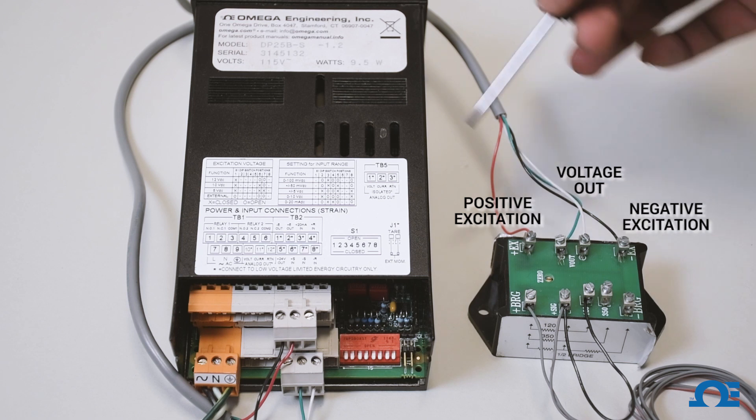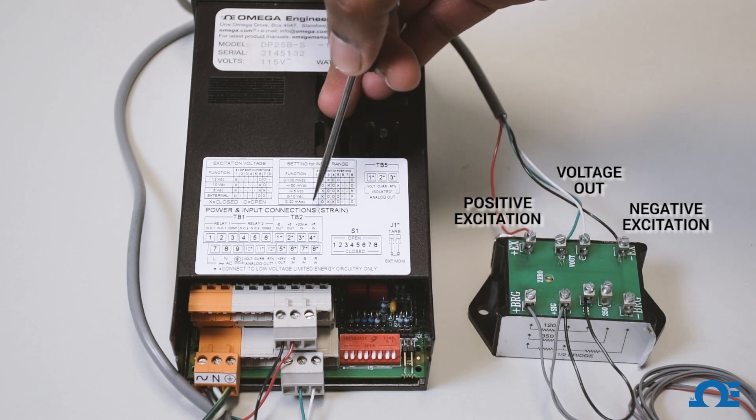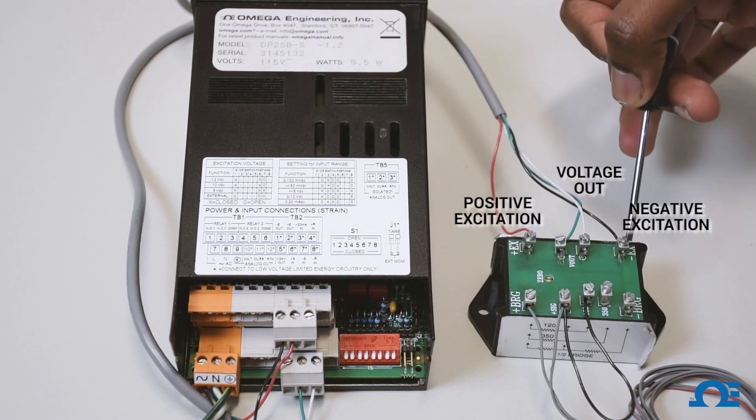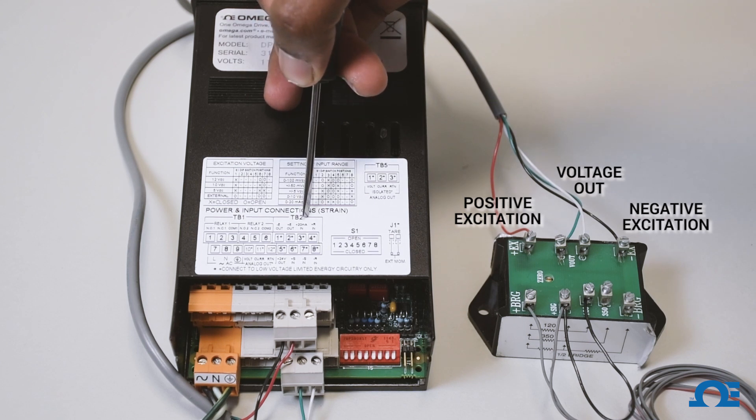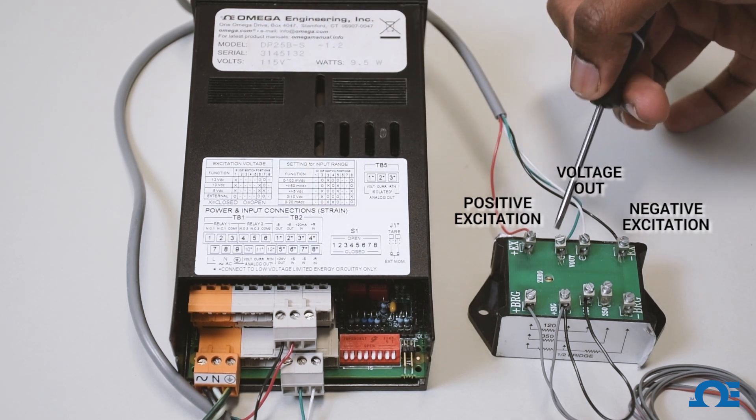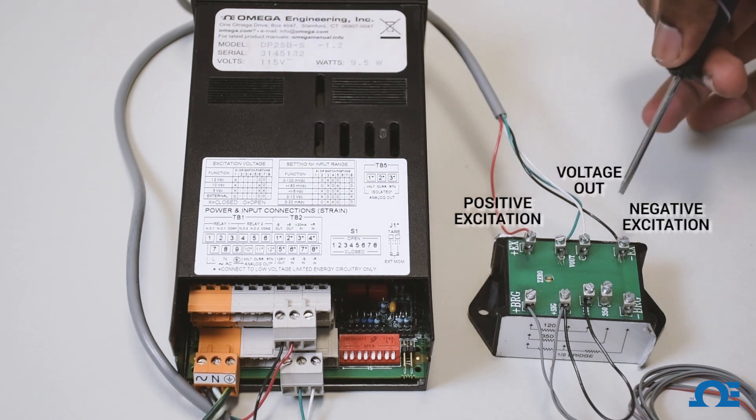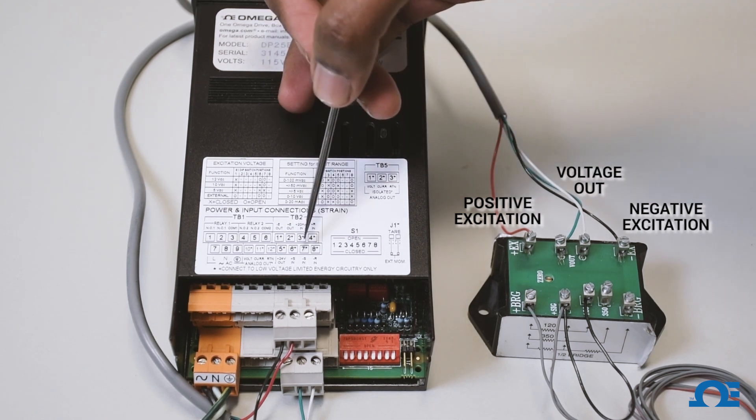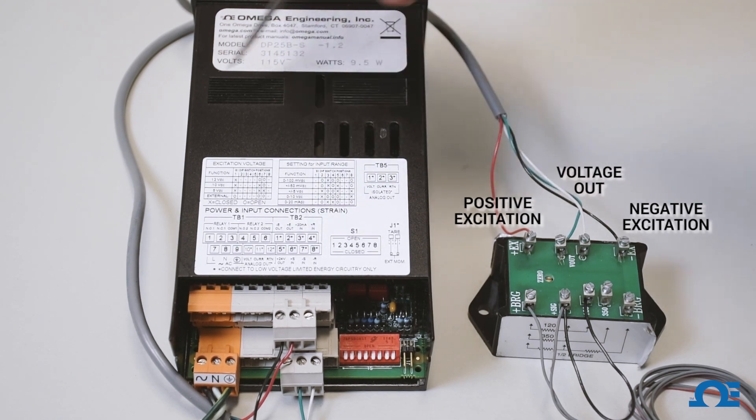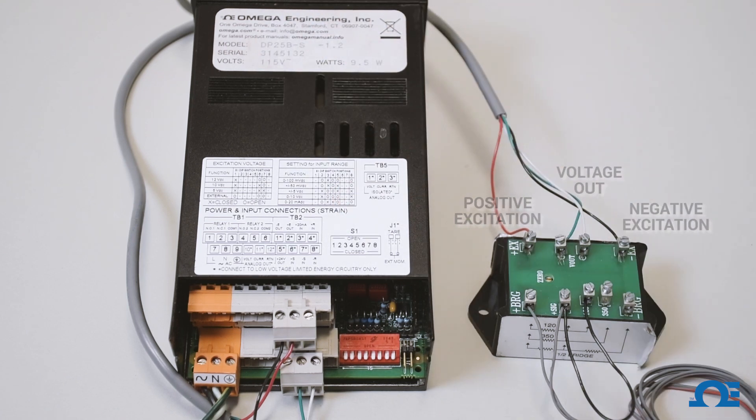Positive excitation connects to number 2 on TB2, negative excitation connects to number 1 on TB2, positive signal connects to number 6 on TB2, and negative signal connects to number 7 on TB2. That's how you connect a strain gauge to the BCM and the BCM module to the DP25B-S meter.